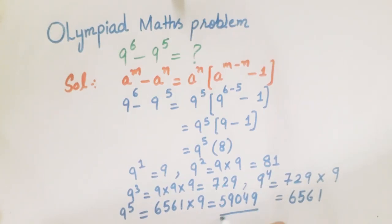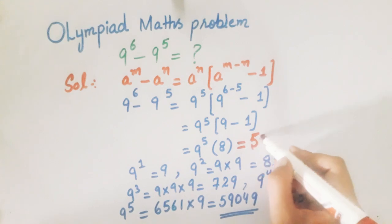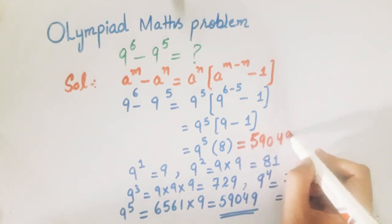We will use this result to solve the problem. We write 9^5 = 59049 and multiply this by 8.